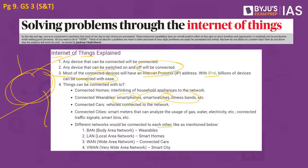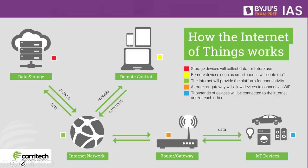Different networks connect to each other: body area network (wearables), local area network (smart homes), wide area network (connected cars), and very wide area network (smart cities). A thing in IoT can be a person with a heart monitor implant, a farm animal with a biochip transponder, or an automobile with inbuilt sensors alerting the driver when tire pressure is low — all of this is Internet of Things.